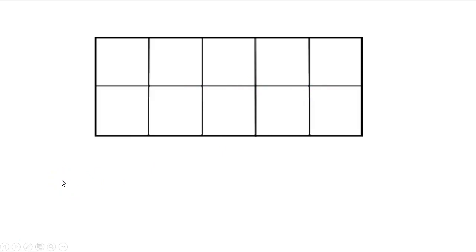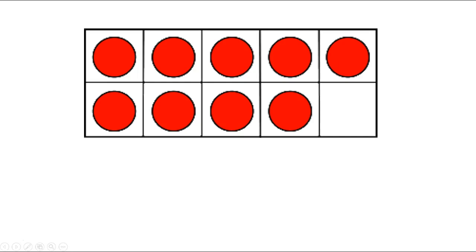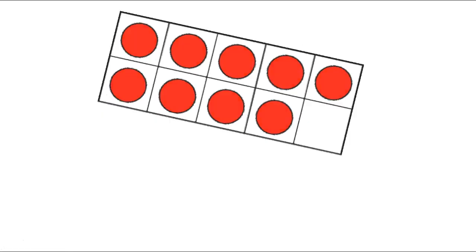Now we're going to practice adding our 10s and making a number sentence with these 10 charts. I'm going to show you a 10 chart with some red dots in it, but only for a couple seconds. How many red dots did we see? If you said 9, you are correct — there were 9 red dots.